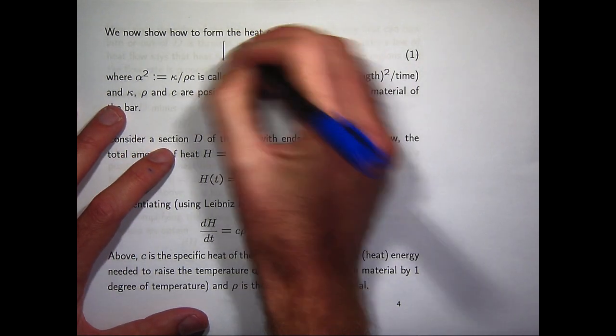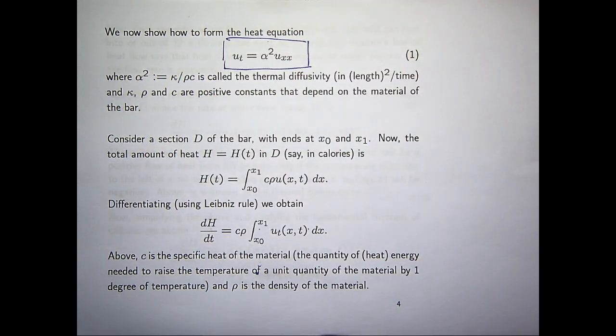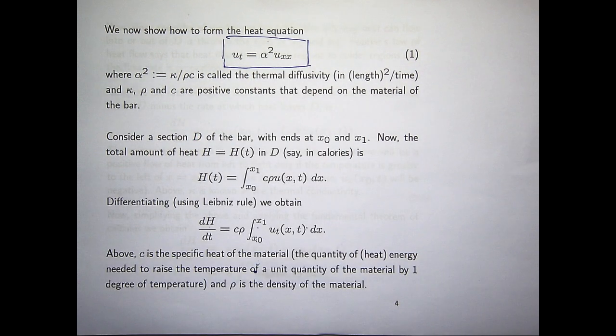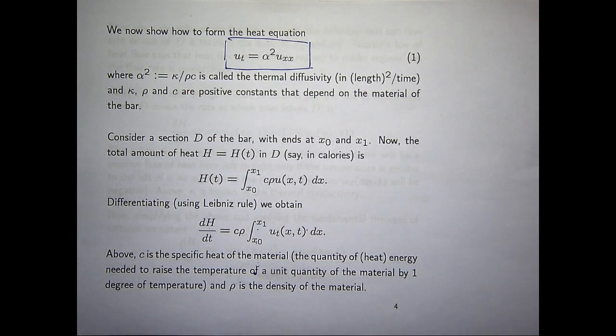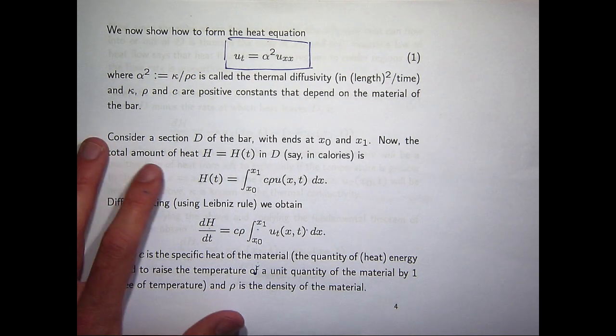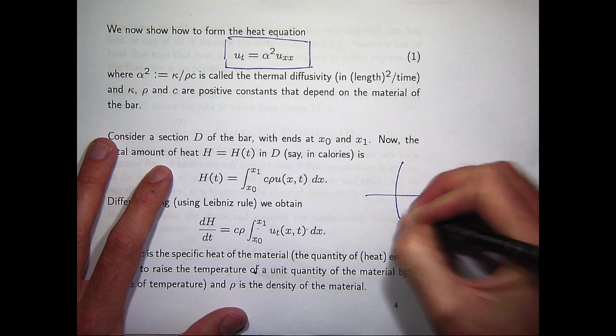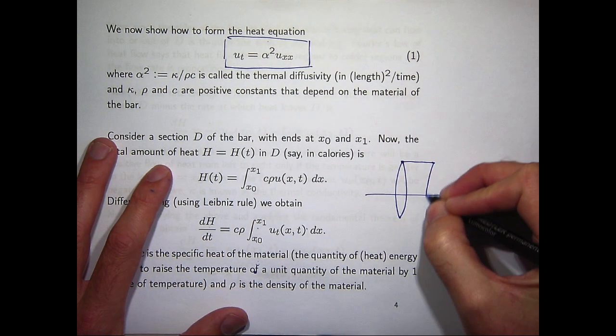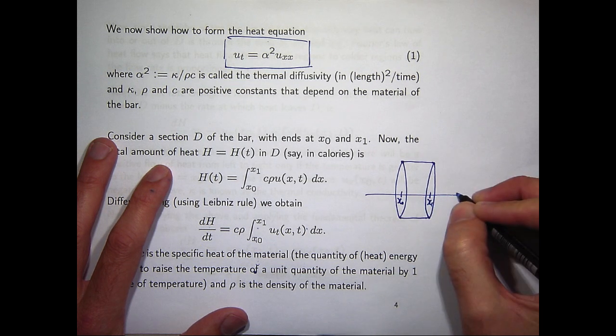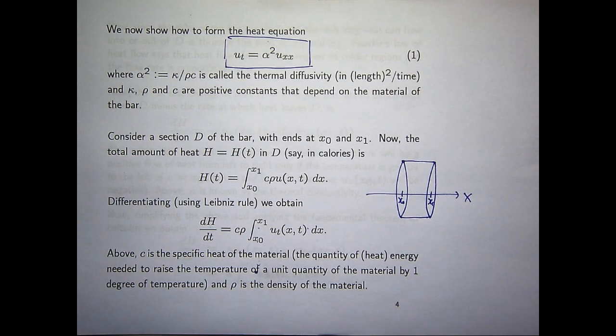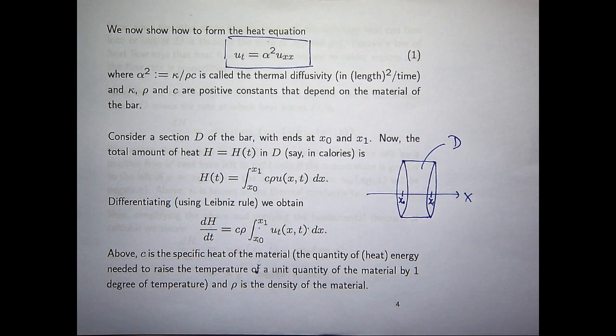So now, we're going to show how to form this heat equation. Now, the alpha squared, the squared's here just for convenience. It doesn't have to be squared. But the alpha is some constant that depends on the material of the bar in question. So under our assumptions, where does this PDE come from then? Well, let's consider some section of our bar or our rod. So just consider a sort of a subsection, if you like. Again, suppose the ends are like at x naught and x1. Call that region of the bar, say, big D.